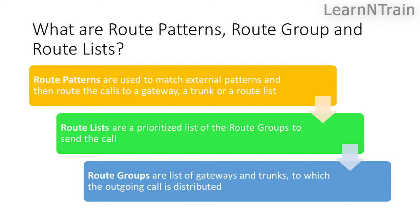What are route patterns, route groups, and route lists? Route patterns are used to match external patterns and then route the calls to a gateway, a trunk, or a route list. Route lists are a prioritized list of route groups to send the call. Route groups are a list of gateways and trunks to which the outgoing call is distributed.